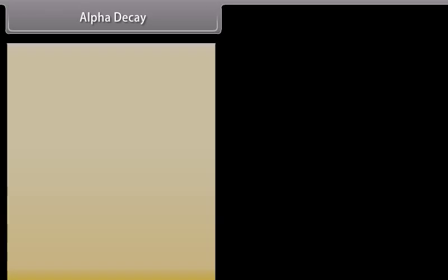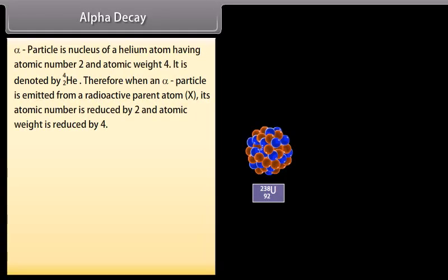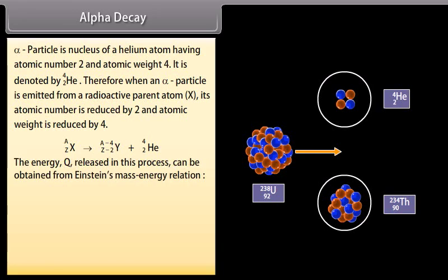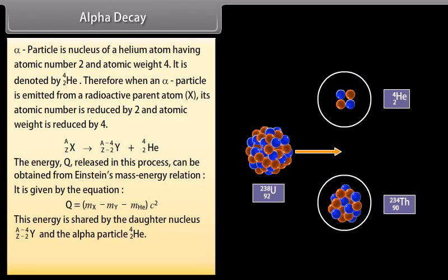Alpha decay. Alpha particle is nucleus of a helium atom having atomic number 2 and atomic weight 4. It is denoted by. Therefore, when an alpha particle is emitted from a radioactive parent atom X, its atomic number is reduced by 2 and atomic weight is reduced by 4. It can be demonstrated as: the energy Q released in this process can be obtained from Einstein's mass energy relation. It is given by the equation Q is equal to M X minus M Y minus M H E into C square. This energy is shared by the daughter nucleus and the alpha particle. For example.